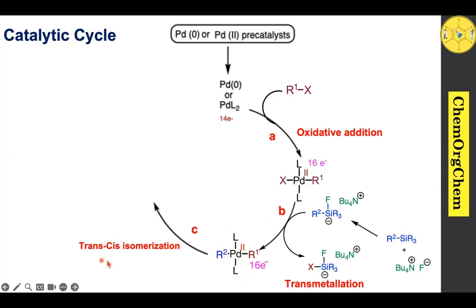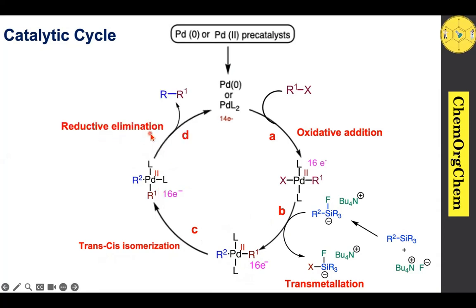After formation of this 16-electron species, it undergoes trans-cis isomerization to produce another 16-electron species, which then undergoes reductive elimination to produce the carbon-carbon coupling product. So oxidative addition, trans-cis isomerization, and reductive elimination are steps mostly similar to our other cross-coupling reactions.